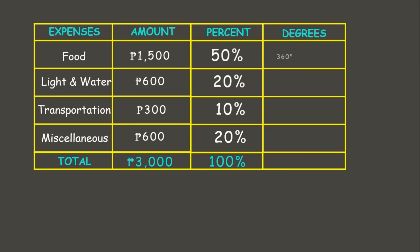Let's try food first: 360 degrees times the percent of food, which is 50 percent. We convert 50 percent to its decimal form, 0.50. Therefore, 360 times 0.50 is 180 degrees. Since 50 percent means half, and half of 360 is 180, that makes sense.